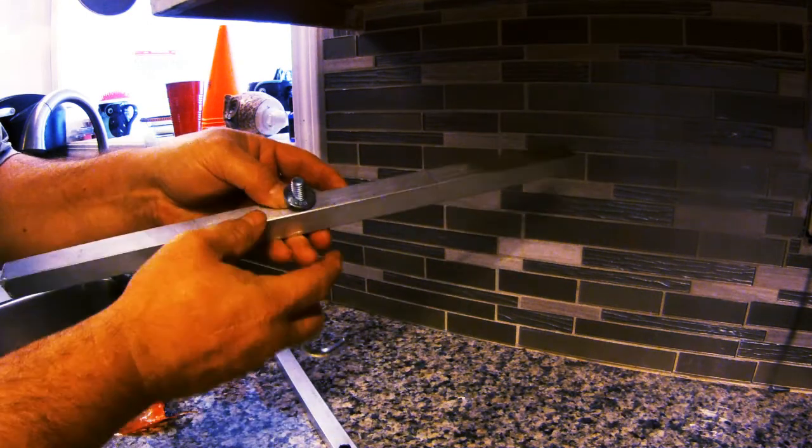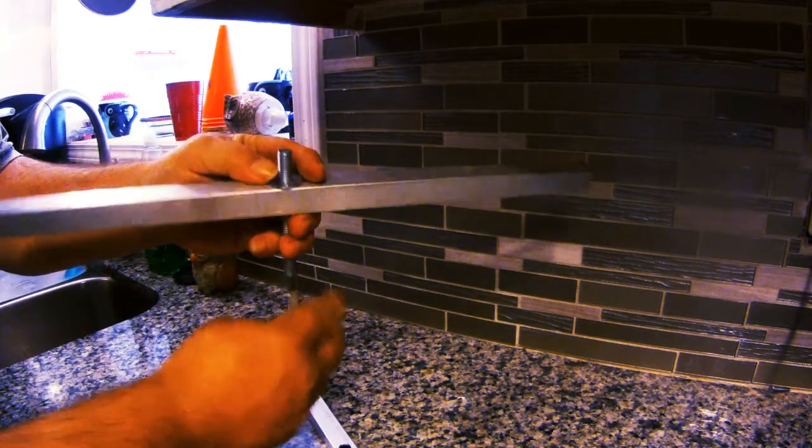Now, along with a couple of washers, place these on top of the hook screw after you've inserted it through the square aluminum pipe.